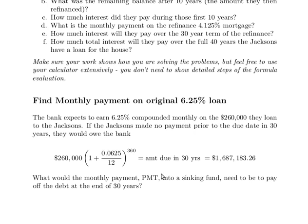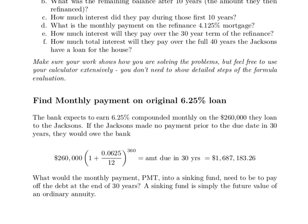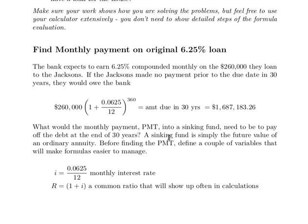What we're going to do is set up a sinking fund to pay off this amount at the end of 30 years. That's essentially what a mortgage is — you're paying monthly to pay off this due amount at the end, and those monthly payments are essentially a sinking fund to accumulate to that amount. A sinking fund is simply the future value of an ordinary annuity. Before calculating the monthly payment, let's define a couple of variables. The monthly interest rate I, and R which equals 1 plus I — that value keeps showing up. Now it's easy to write the sinking fund formula.